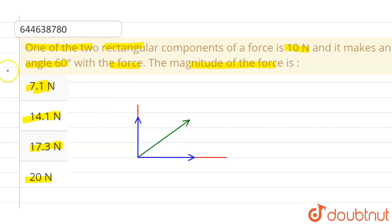Now let us assume that this particular component, this component makes angle 60 degree with the force. So this component will be F cos 60 degree and this is given as 10 newton in the question. This is equals to 10 newton.